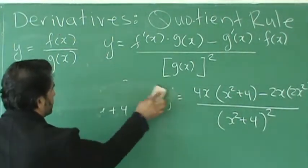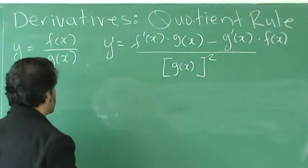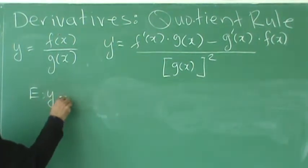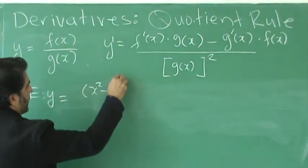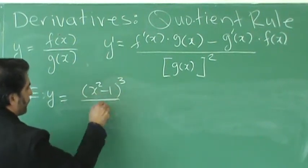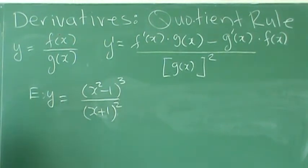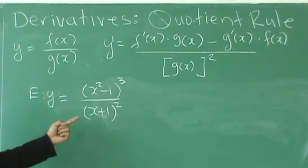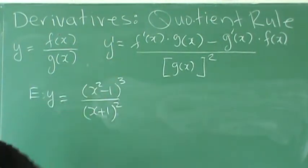Let's apply another example. So for example, we have y equals x squared minus 1 to the power of 3 over x plus 1 to the power of 2. Consider the top as f of x and the bottom as g of x, and then we apply the general form of the quotient rule.